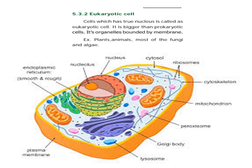Multicellular organisms are eukaryotic cells. In the picture you can see the nucleus — the nucleus has a membrane.